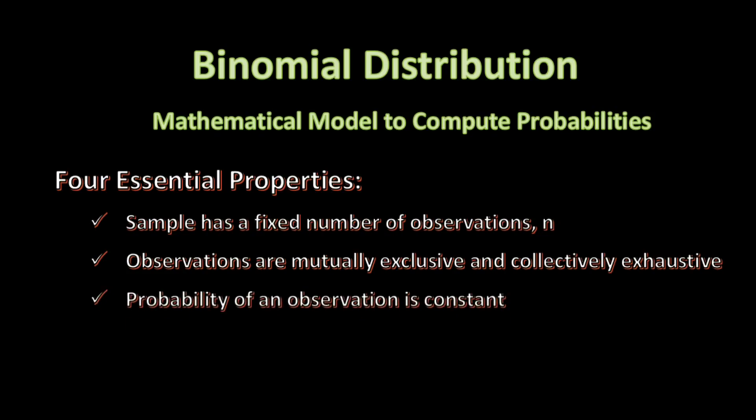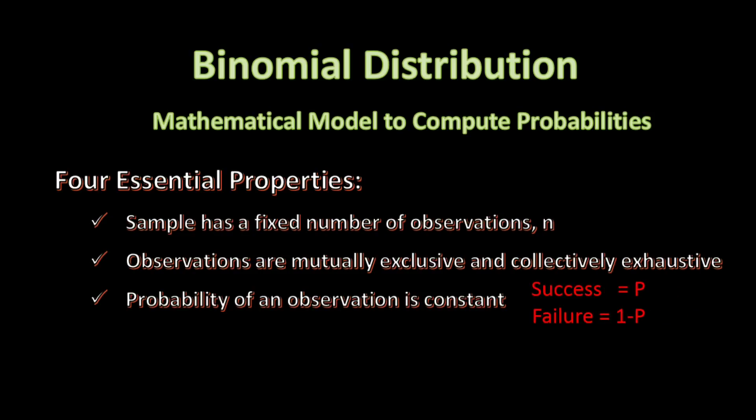usually called a success or a failure. Third, the probability of an observation is constant from observation to observation. So if we classify an observation as a success, let's call it P, or a failure, let's call it 1 minus P — the probability of P is constant from observation to observation.